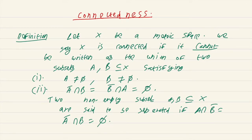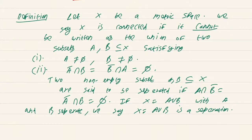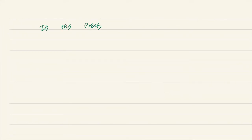In other words, if you can write x as a union of separated sets, then we say x is not connected. So if x equals A union B with A and B separated, we say x equals A union B is a separation. In this event, we also say x is disconnected.